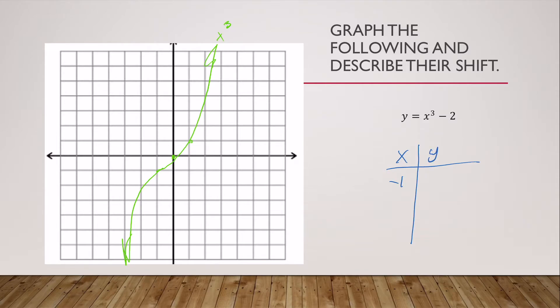When x is negative one, y is negative one cubed minus two, which is negative three. When x is zero, y is negative two. And when x is one, y is one cubed minus two, which is negative one. As you can see, all of these points shifted down two. So here's what our graph looks like. Find at least three points when you're graphing a cubic. This was our cubic function shifted down two.